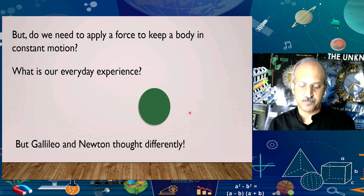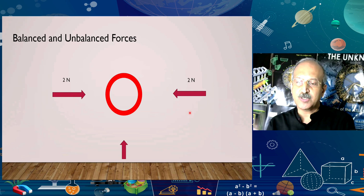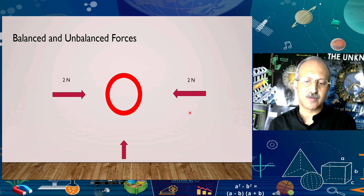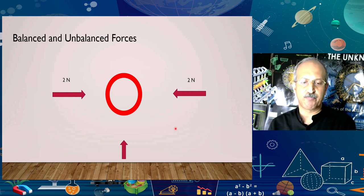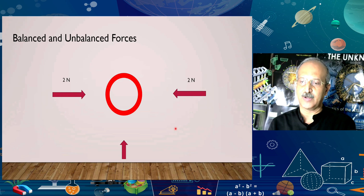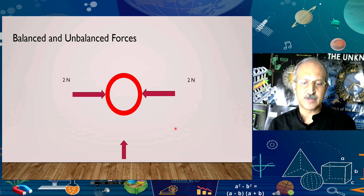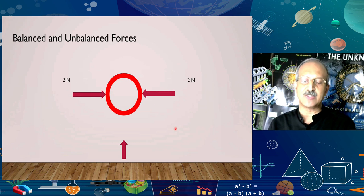But then Galileo did some experiments, and these experiments changed our understanding of nature completely, and ultimately the statement of the laws was changed. So what experiment did Galileo actually do? But just before that, let's talk about balanced and unbalanced forces for a short time, because we will need this idea shortly. In this diagram, there are two forces — one from the left and one from the right, each of two Newtons.